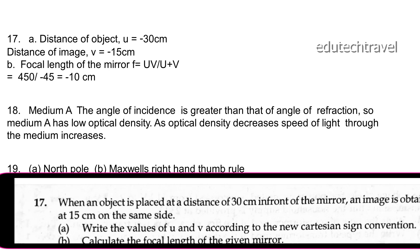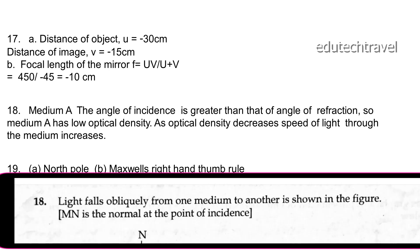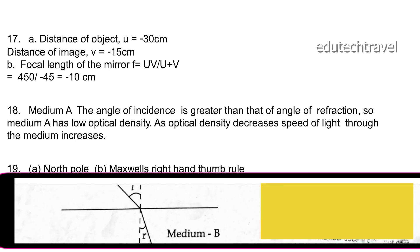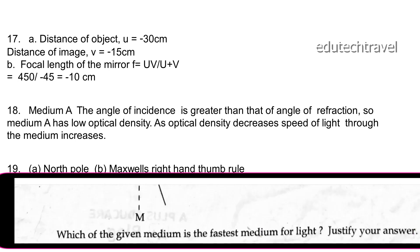Light falls obliquely from one medium to another. Which of the given media is the fastest medium for light? Medium A. The angle of incidence is greater than the angle of refraction, so medium A has low optical density. As optical density decreases, the speed of light through the medium increases.